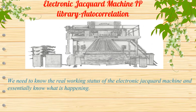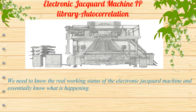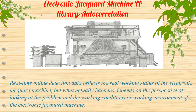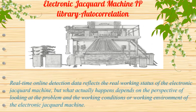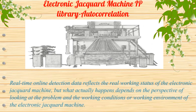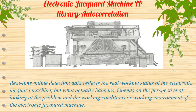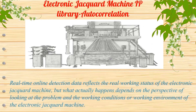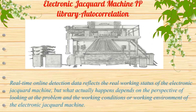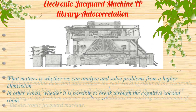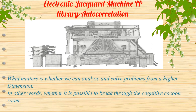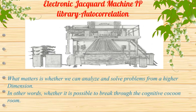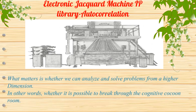We need to know the real working status of the electronic jacquard machine and essentially know what is happening. Real-time online detection data reflects the real working status of the electronic jacquard machine. But what actually happens depends on the perspective of looking at the problem and the working conditions or working environment of the electronic jacquard machine. What matters is whether we can analyze and solve problems from a higher dimension.